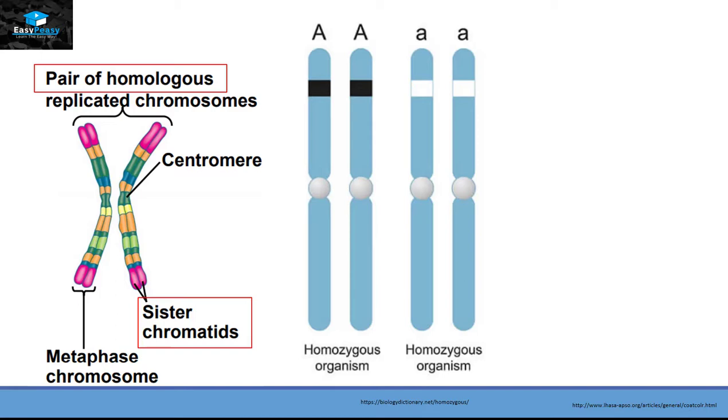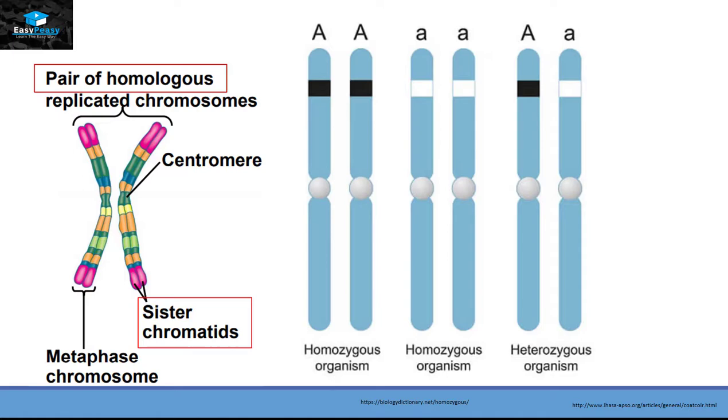This person is also a homozygous organism but having the recessive trait of that gene. Some organisms have one capital A and one small a gene and that type of organism is called a heterozygous organism.